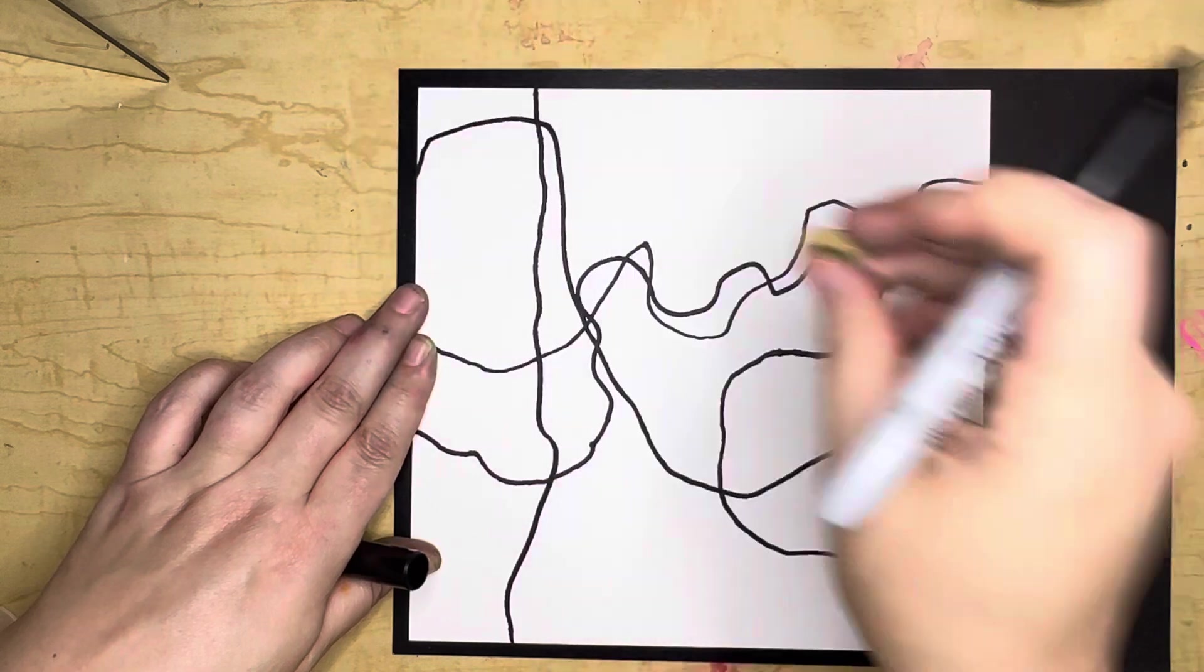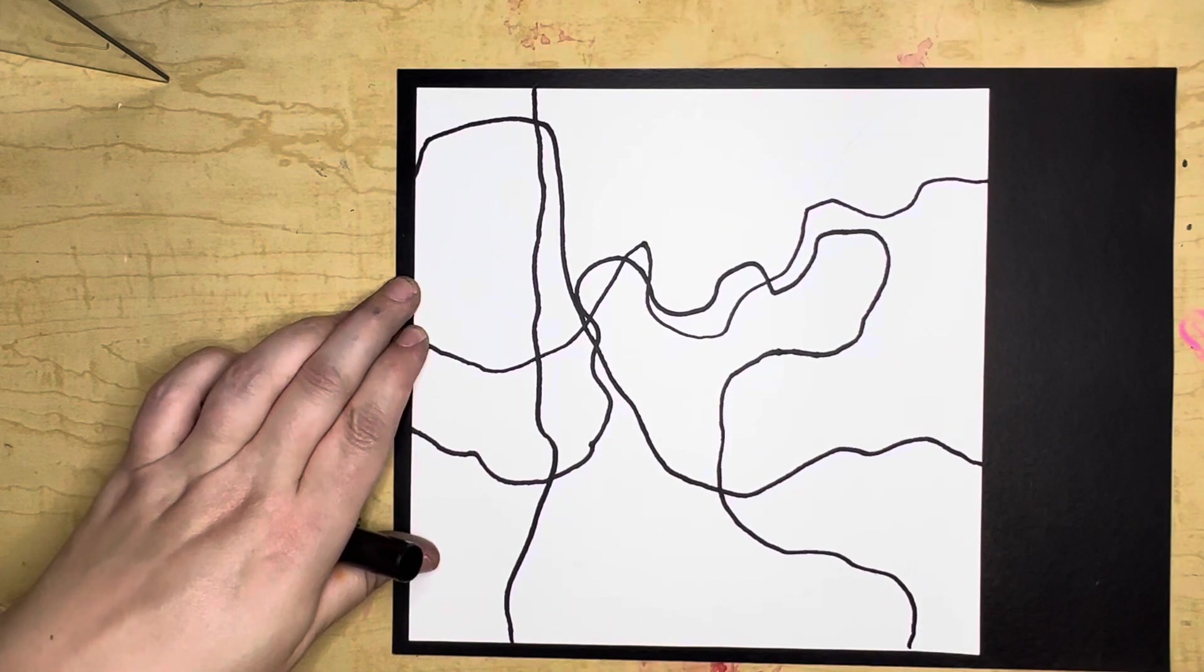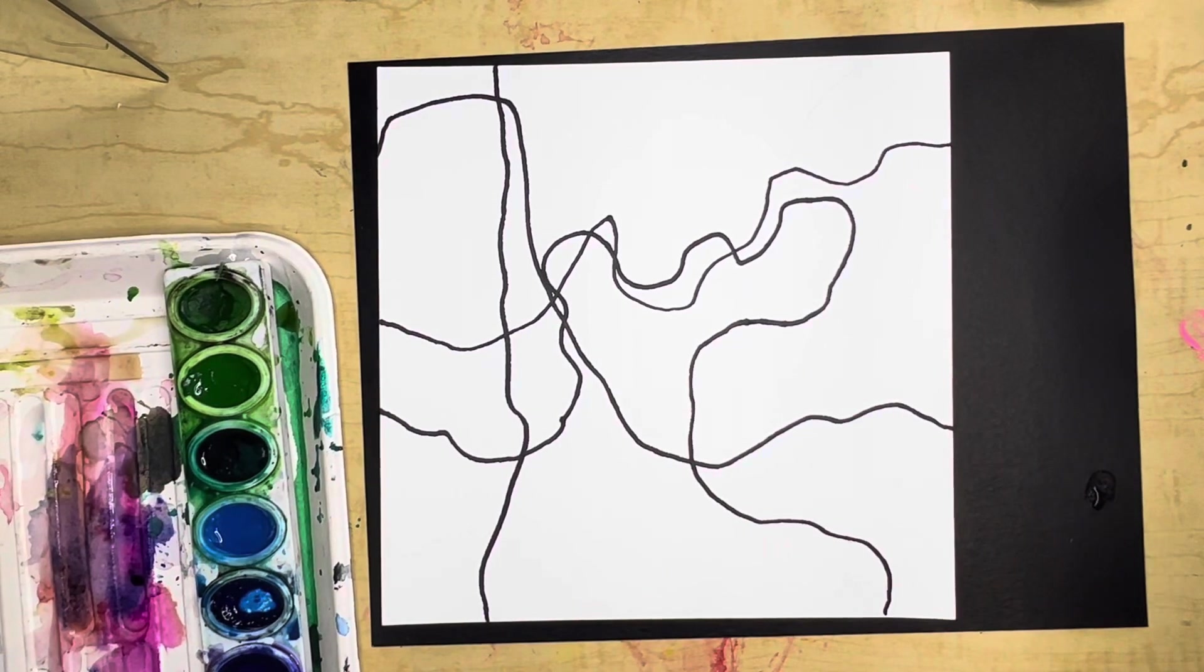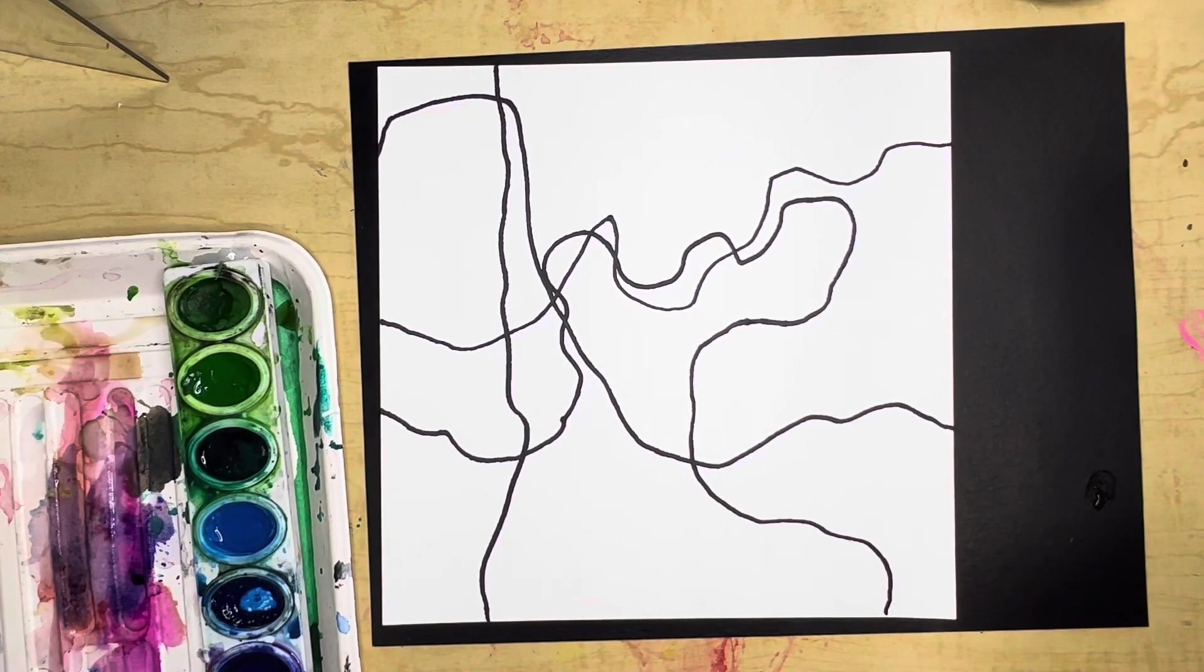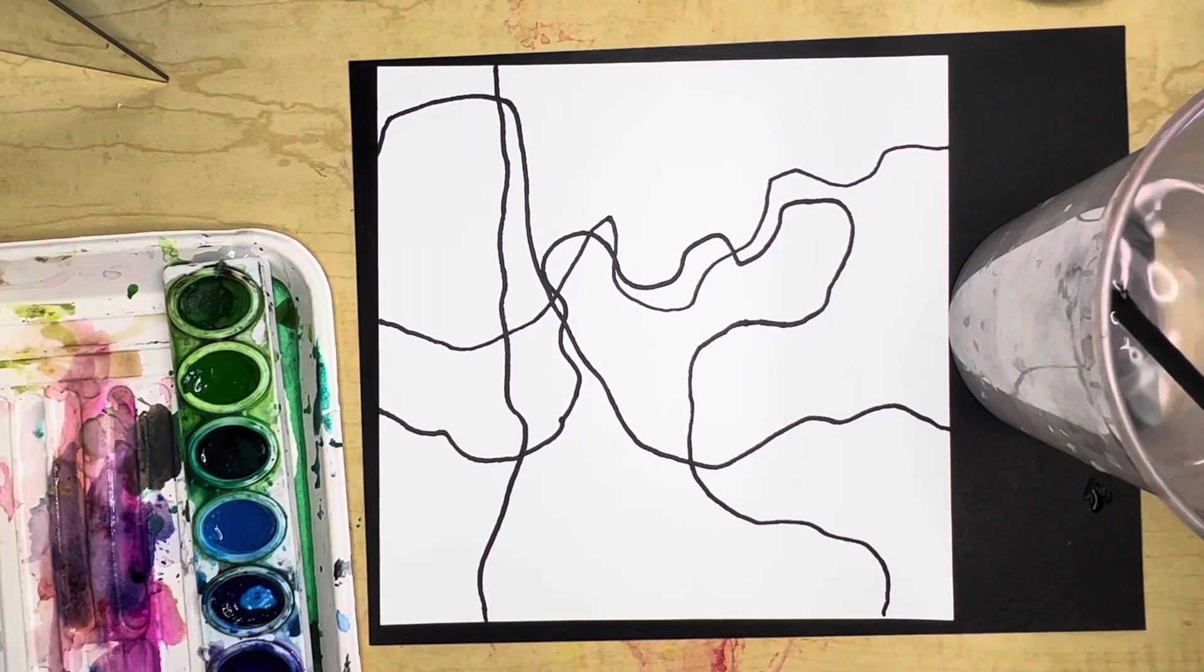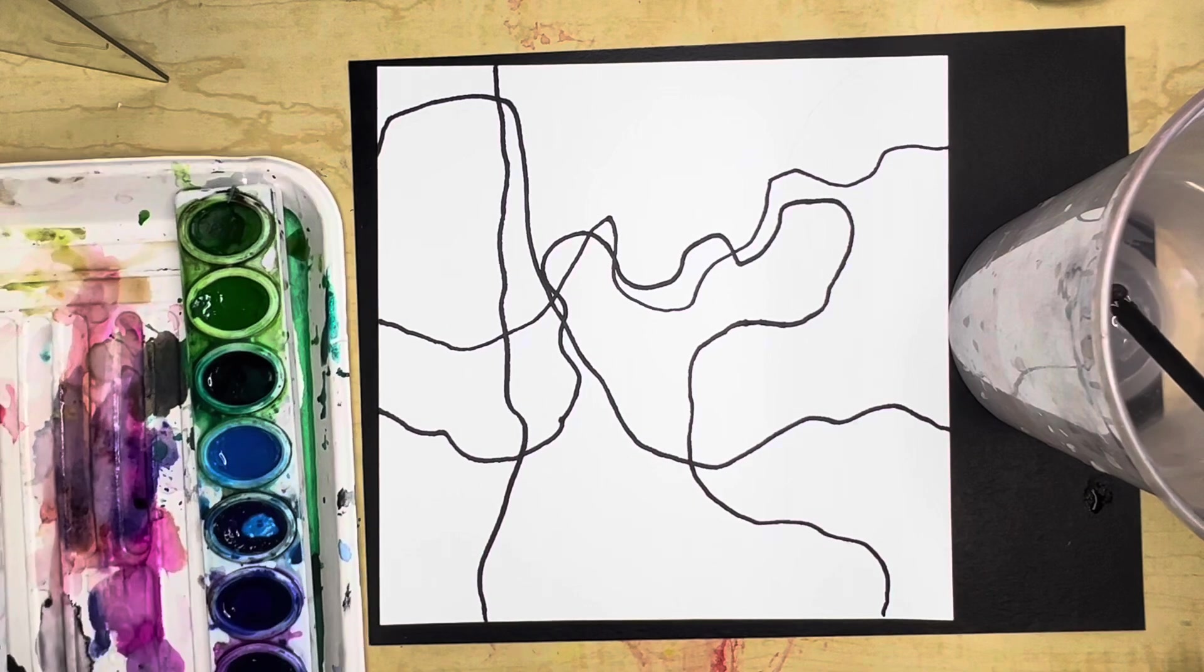Alright, so that finished and now I have some really cool organic lines. The same way that water flows or winds push, our lines were created kind of naturally and so they are organic. They are not straight. They were not made with a ruler.